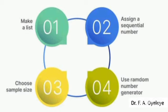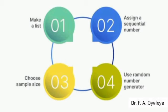Number three is to choose a sample size. For instance, your sample will be 200 out of that 1,000. Mind you, in statistics there is a formula for calculating sample size, but for this example we choose 200. Number four is to use a random number generator — divide 1,000 by 200 and you get five. Starting from the first five, you number and pick until you have selected your 200 samples.